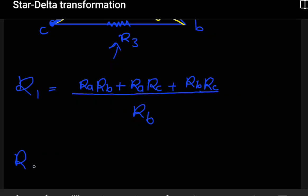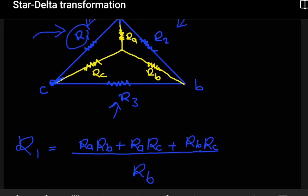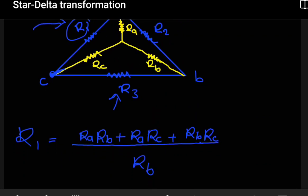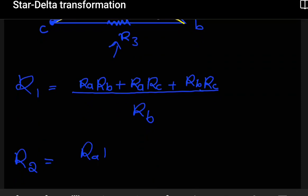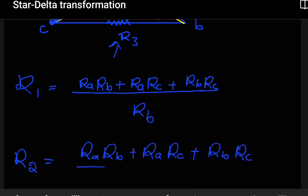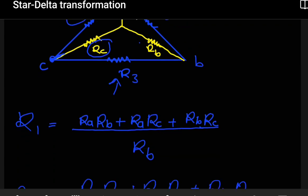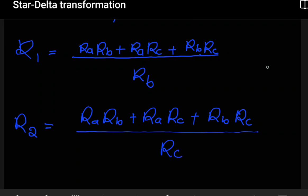Say you wanted to find R-2. When you look at it, the numerator is the same in this case. So we're still going to have R-A times R-B plus R-B times R-C plus R-A times R-C. The difference is what we divide with. Since we are finding R-2, R-2 is right here and it is directly related to R-A and R-B, but it has nothing to do with R-C — R-C is at the far end. So we divide by R-C.